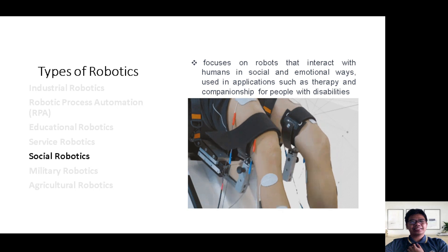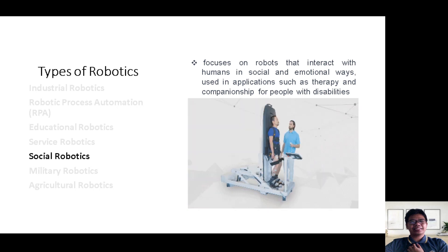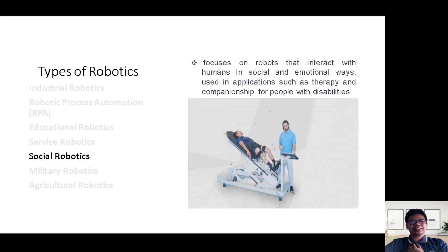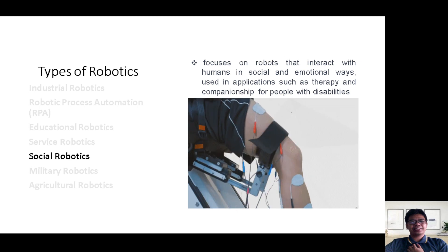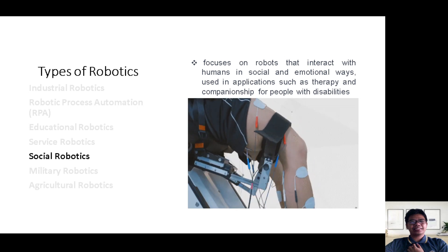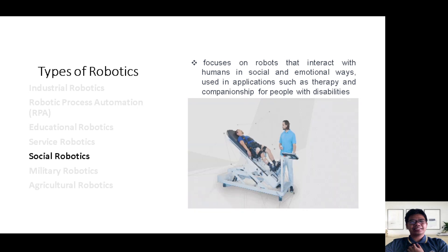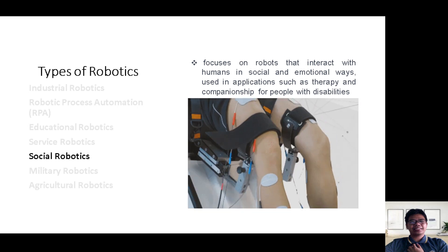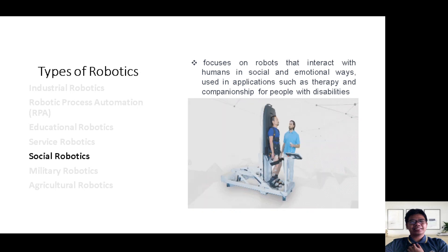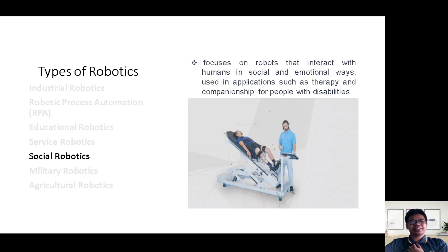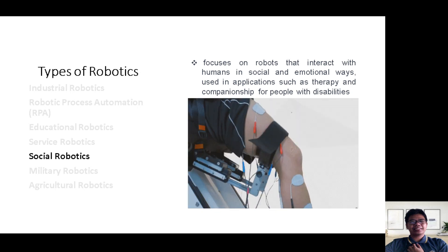Social robotics is all about creating robots that interact with us on social and emotional levels. These robots find their place in applications like therapy and companionship, for people with disabilities.